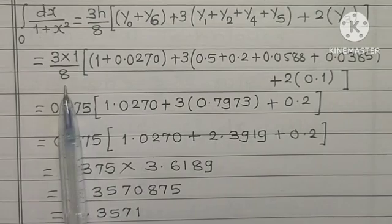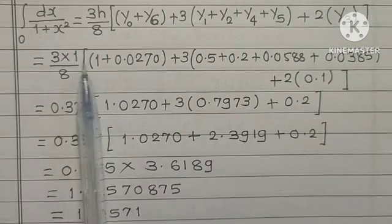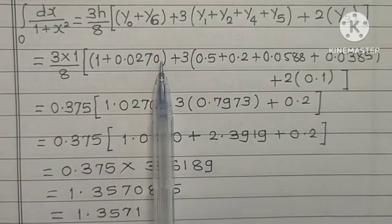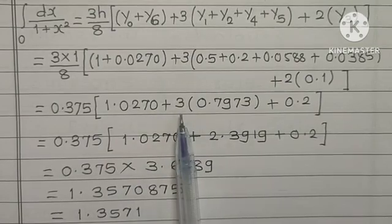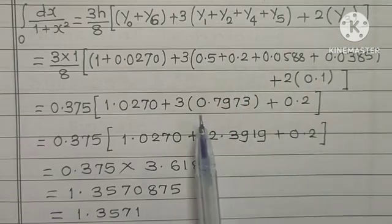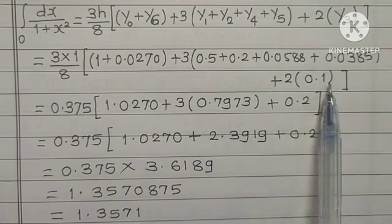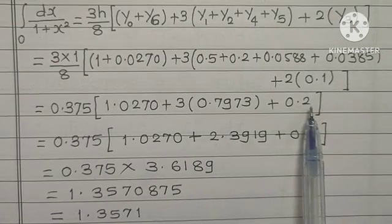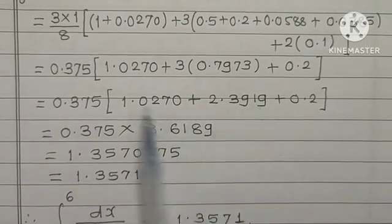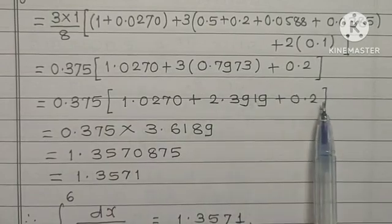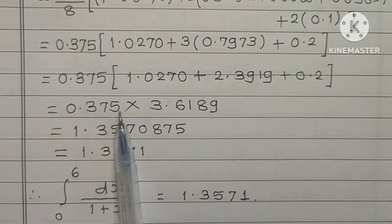Now friends, 3 into 1, that is 3 upon 8. 3 by 8 is 0.375. Into bracket: 1 plus 0.0270. This addition is 1.0270 plus, here I will do the addition. This addition is 0.7973 plus 2, I have multiplied here, this is 0.2. Then I have multiplied here. Then this addition is 2.3919.